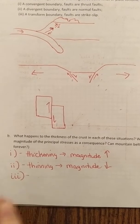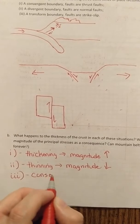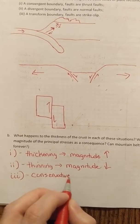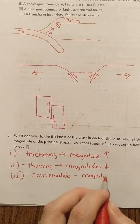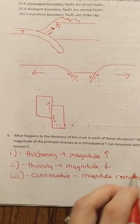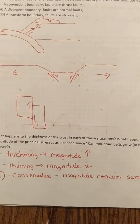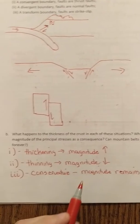And then for our final one, transform. We call this a conservative boundary. So the magnitude basically remains the same. It builds right before the earthquake, but it builds about the same amount.